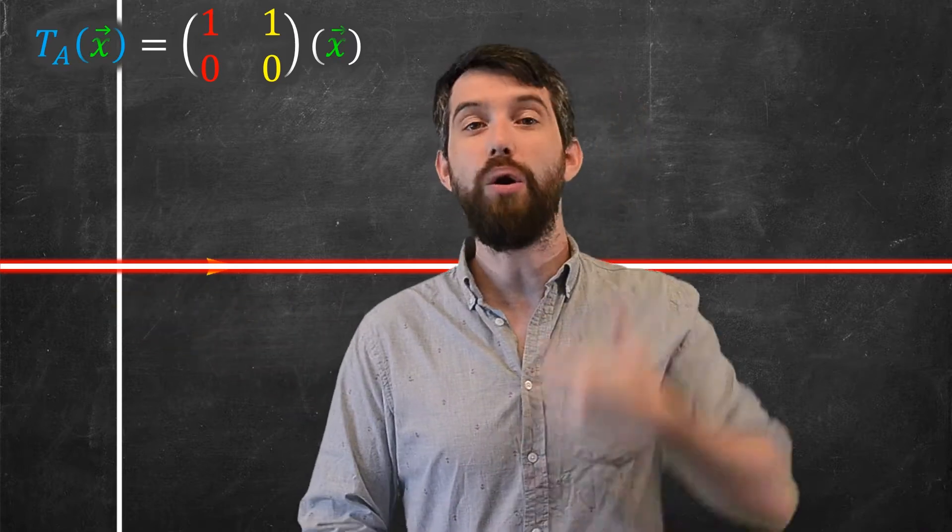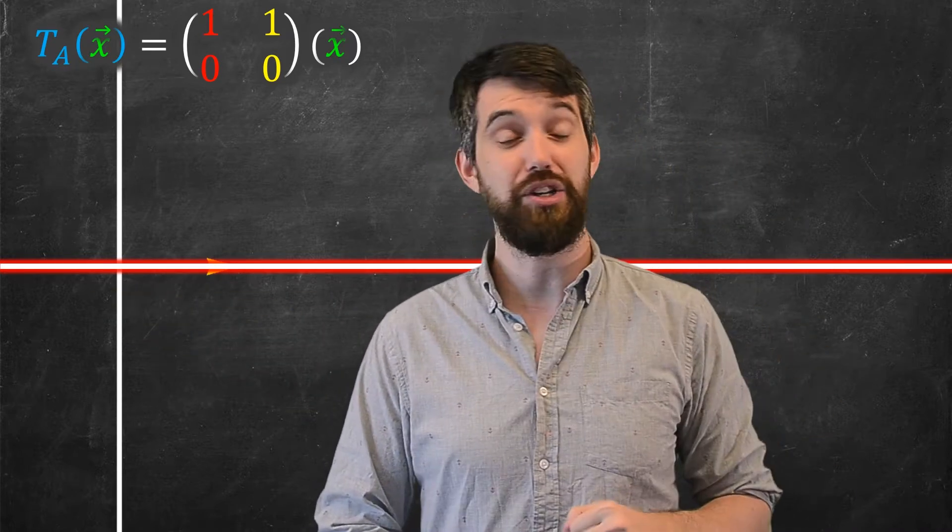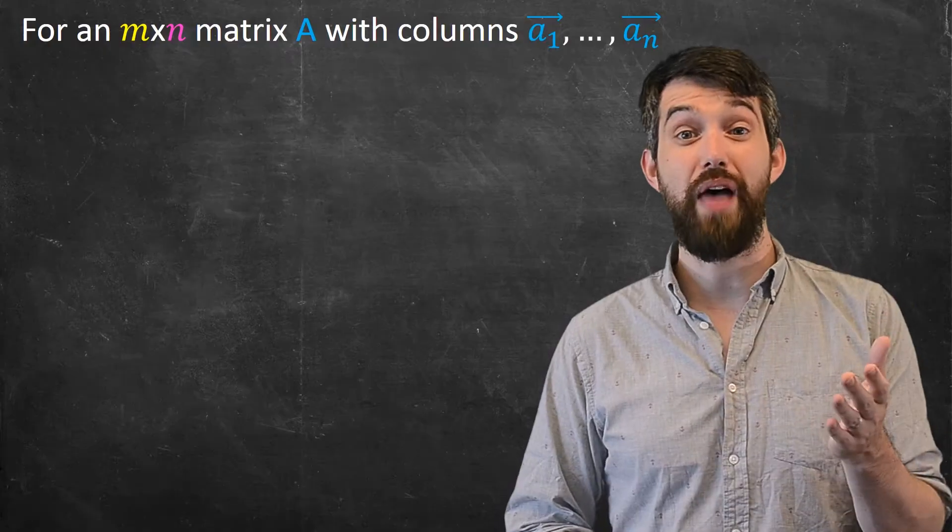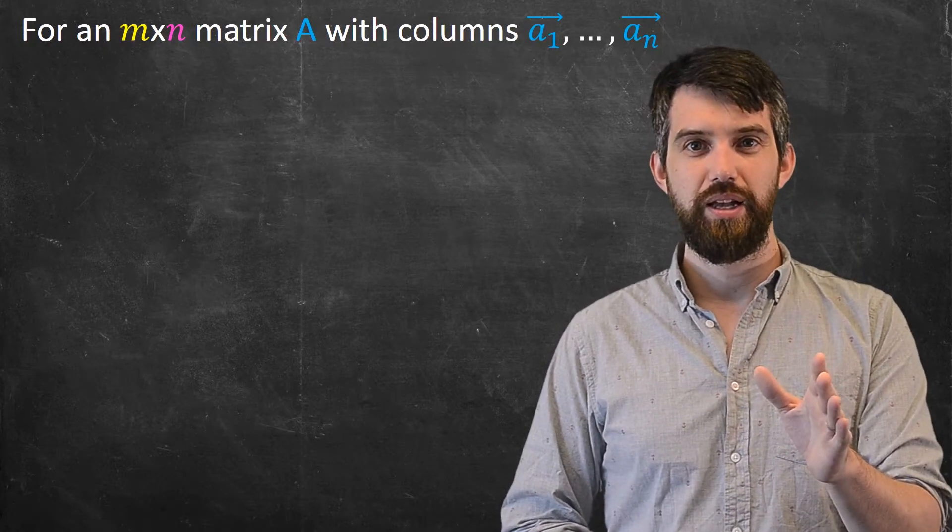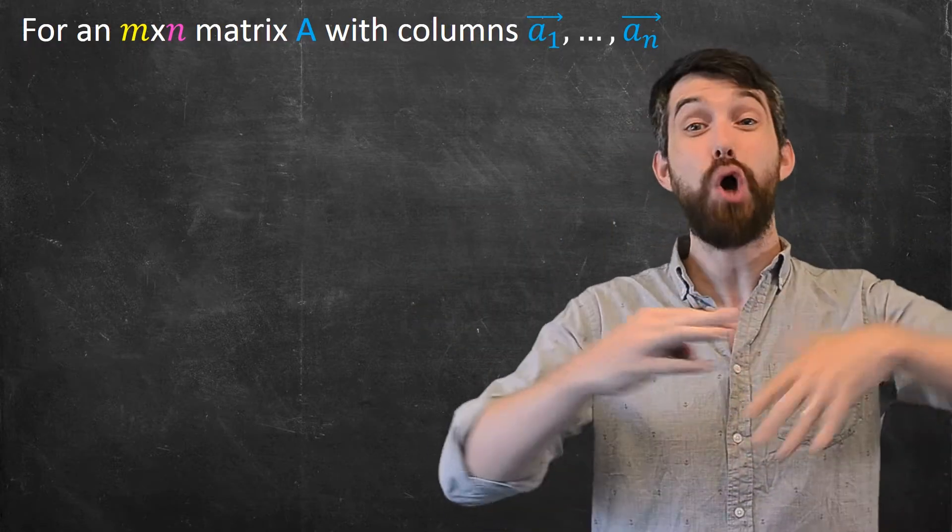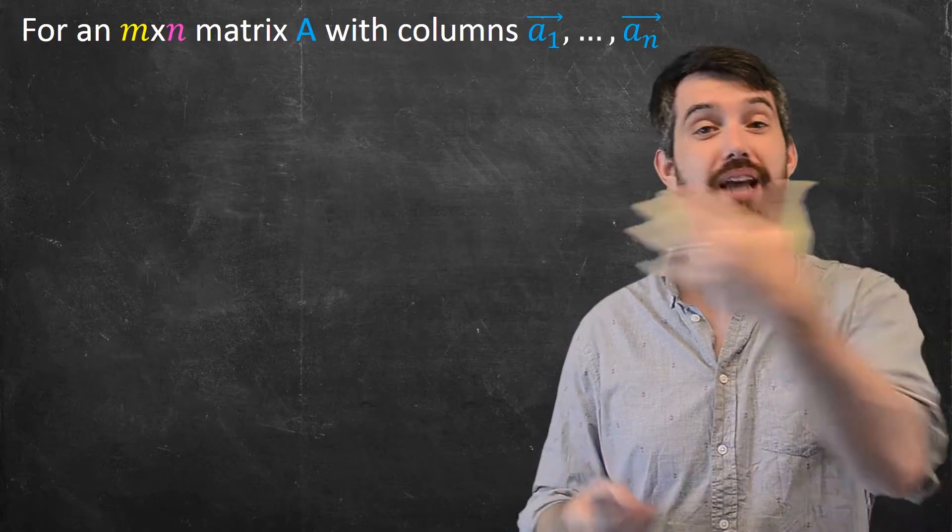So this set here, all of the targets of my transformation, is something that I'm interested in studying, and I'm going to give it a name. I'm going to call that the column space. So I want to look generally, if I've got a matrix A, it's an m by n matrix, and its columns are the columns a₁ down to aₙ.